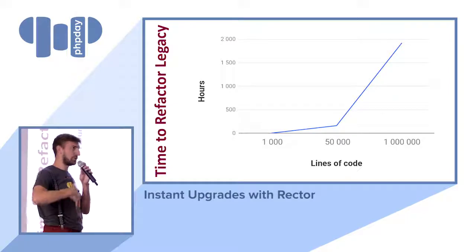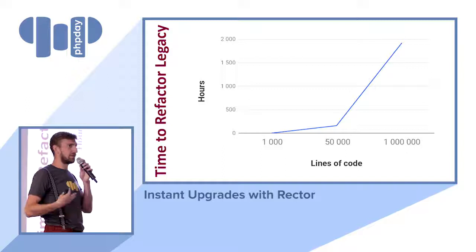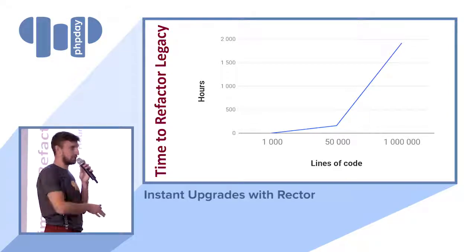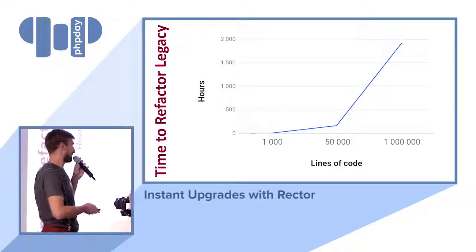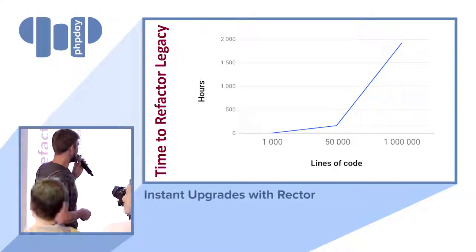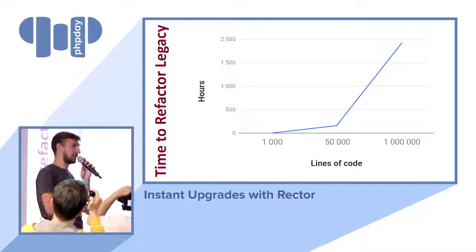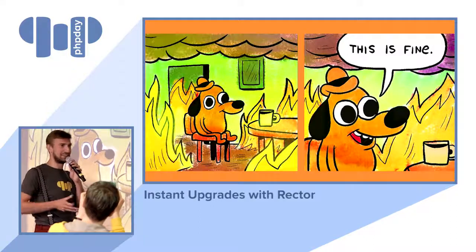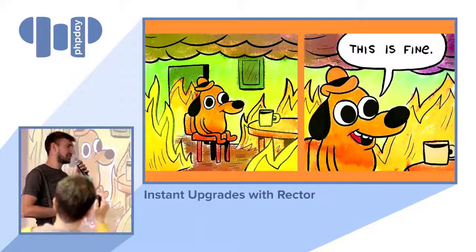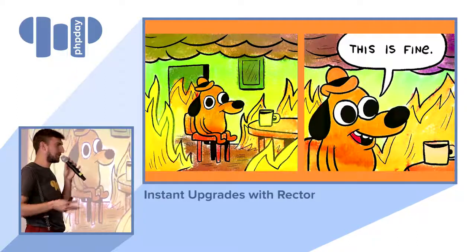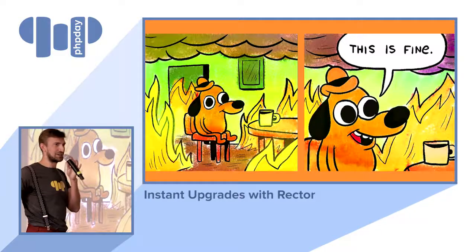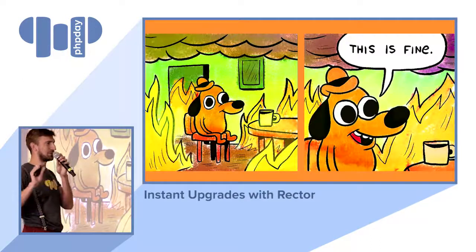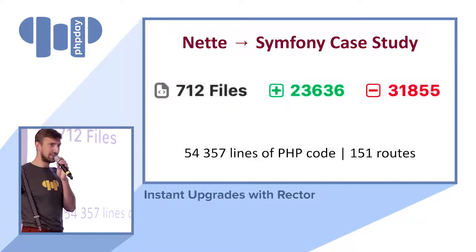That's the problem with code: the more code that exists, the bigger the problems. You have to maintain it, write tests, send junior programmers in to find something useful. If you want to refactor something with one million lines of code and add type declarations, it may take a very long time. Most people think: it's a big project, it's legacy, it's expensive, it takes so much time — it's just the way it works. You read books about refactoring legacy applications and they say: take one file at a time, decouple to static methods.